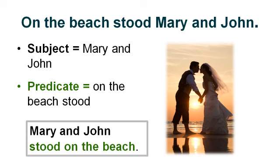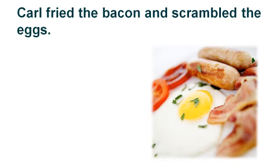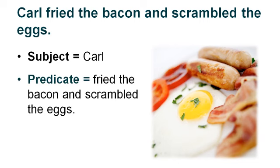Remember, the predicate starts with the main verb of the sentence. In this sentence the verb is stood. Carl fried the bacon and scrambled the eggs. The subject is Carl because he is performing the action — he is the one frying the bacon and scrambling the eggs. So the predicate is fried the bacon and scrambled the eggs. Remember, fried is the first verb and the main verb in this sentence, so everything starting with fried all the way down — fried the bacon and scrambled the eggs — is what we call the predicate.